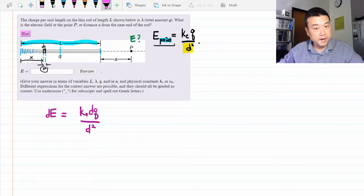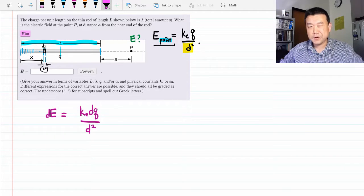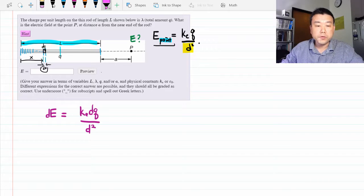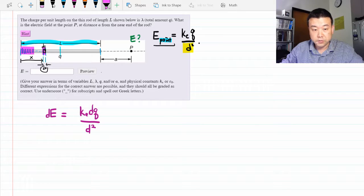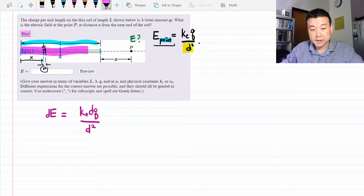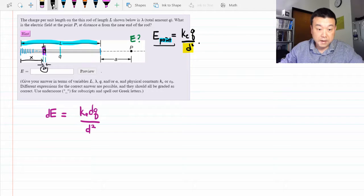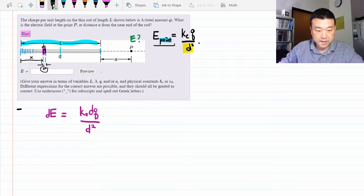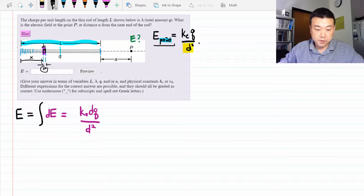And you have all taken calculus before. This is now what we are going to say. This is the meaning of the integral. We are going to say when we add up all the contributions from pieces like dq, from x equals 0 to x equals L, that's going to give us the net electric field. Let me write that down.